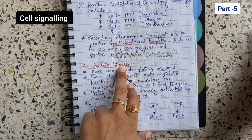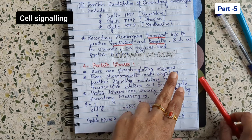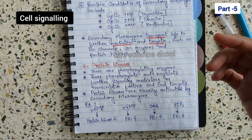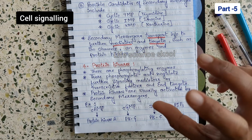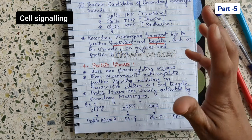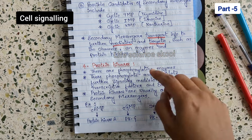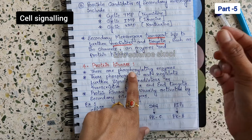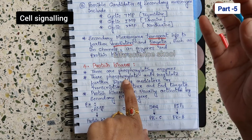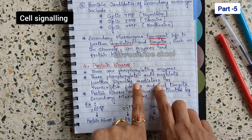Protein kinases are signaling mediators. The function of protein kinases is that they are phosphorylating enzymes. Phosphorylation means when an enzyme gets phosphorylated, there is a change in its structural conformation, causing it to become either active or inactive, or modifying its function. The protein kinase adds inorganic phosphate to an enzyme to make it active.